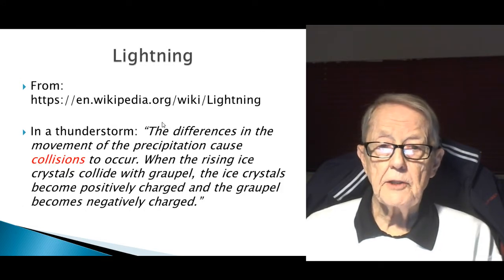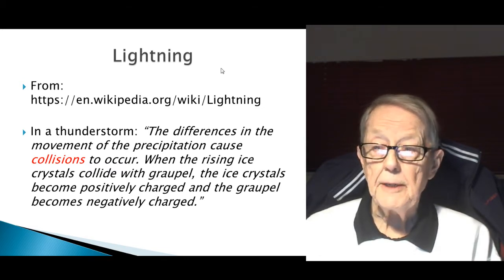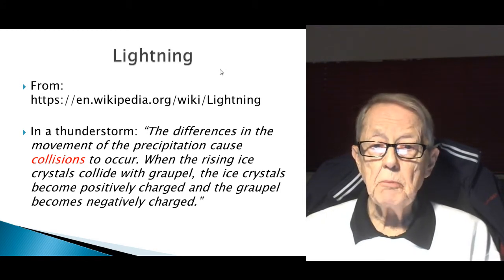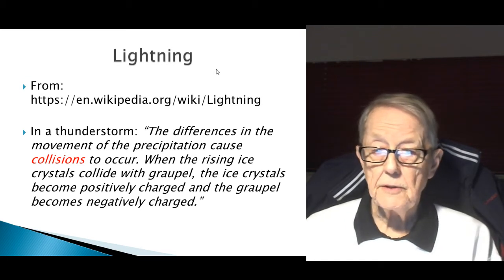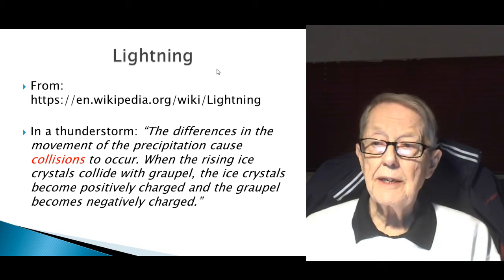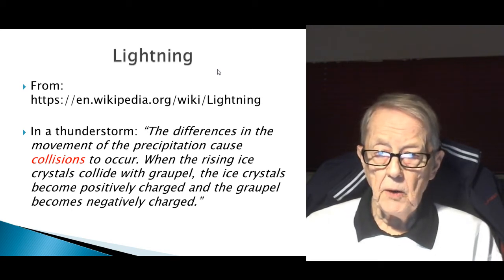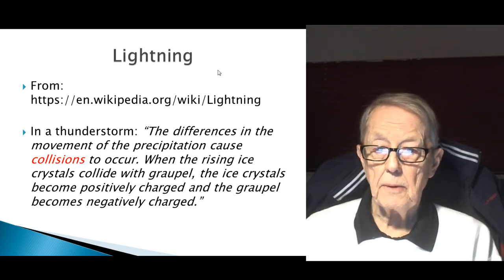So let's take a look at lightning. Here is a definition of lightning from Wikipedia. It says the differences in the movement of precipitation — that is, ice particles and ice water molecules — cause collisions to occur. This is basically the thermals. When the rising ice crystals collide with Graupel — that's a new word — the ice crystals become positively charged and the Graupel becomes negatively charged.